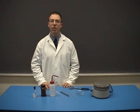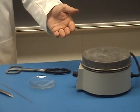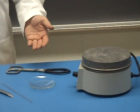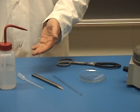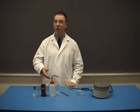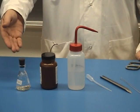For the next lab, the materials that you'll need are a hot plate, some tongs, two watch glasses, a glass stirring rod, a spatula, a dropper, pure water, sodium iodide, and lead nitrate.